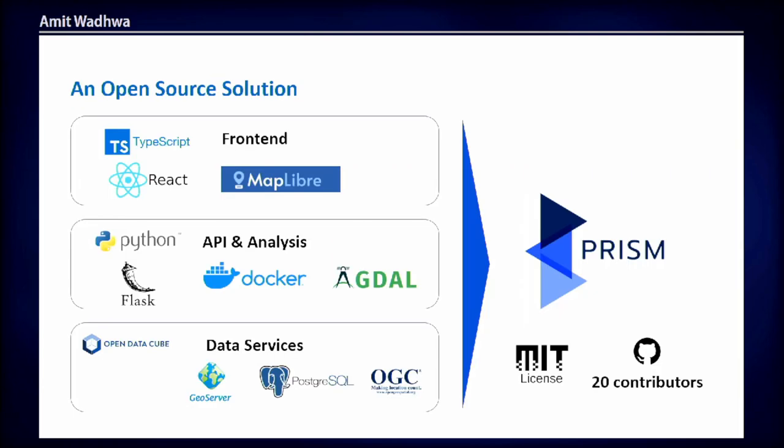PRISM is a fully open source solution. The front end is built on TypeScript, React, and MapLibre. We have a backend API built on Python and Flask that handles downloading data and running analysis, returning outputs to the front end. You can use Docker — there's a Docker image for it. We use GDAL for running the analysis, PostgreSQL for managing data, and GeoServer for serving it. Data services can connect via OGC requests. Currently there are about 20 contributors and it's MIT licensed.